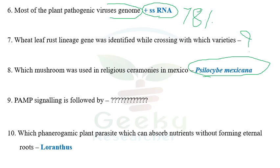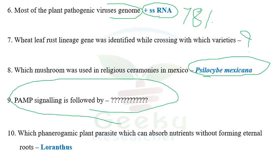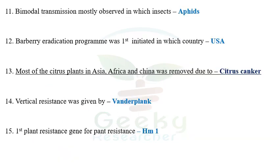The next question: PAMP signaling is followed by — I don't know the answer; if you know, comment below. The tenth question: which phanerogamic plant parasite absorbs nutrients without forming any external roots? Loranthus can absorb nutrients without forming external roots. The options given included Loranthus and some other phanerogamic parasites. According to the options given, Loranthus seems to be the most reliable answer.